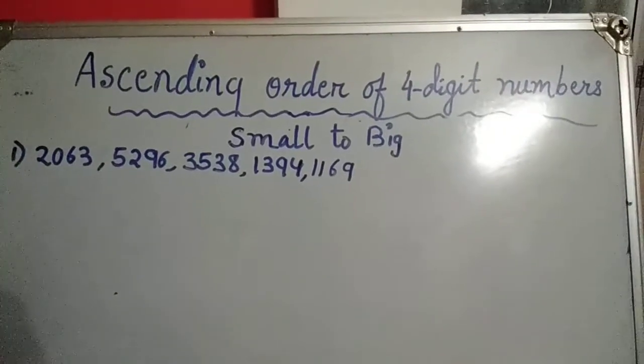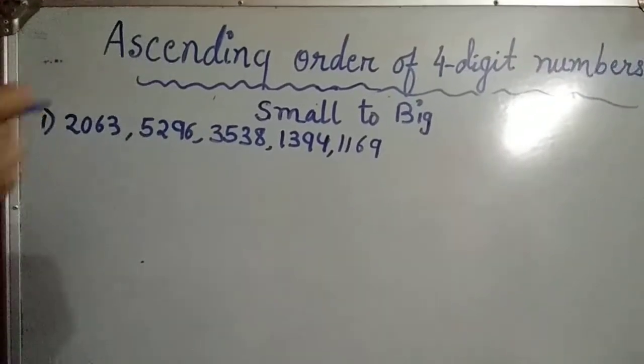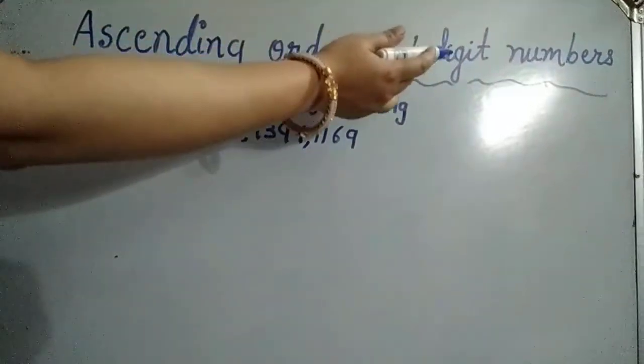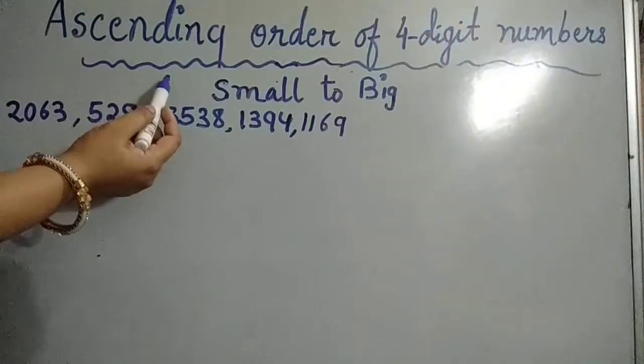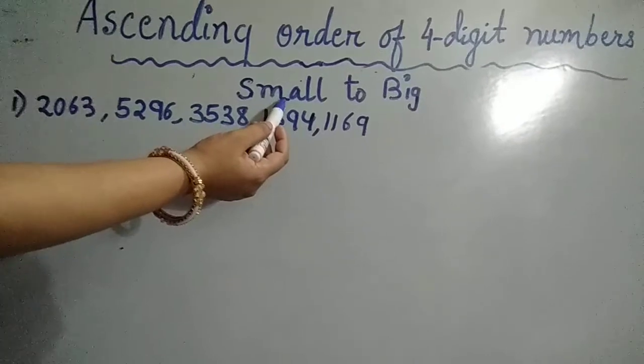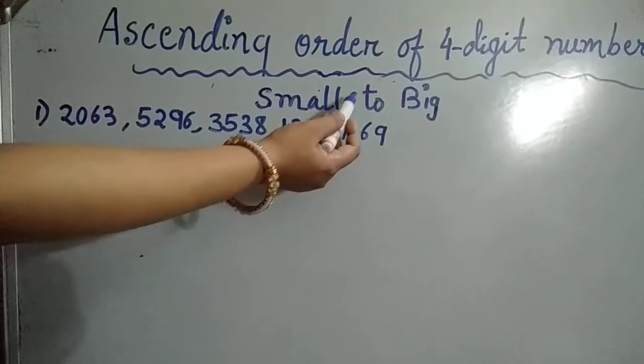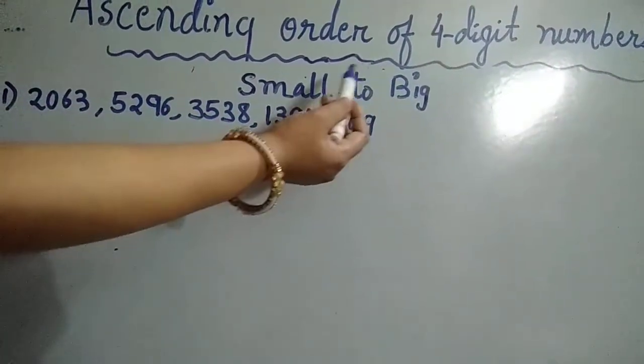So children, now we will see another video on ascending order of four-digit numbers. You know what is ascending order? Ascending order is arranging the numbers from smallest to biggest, or small to big.